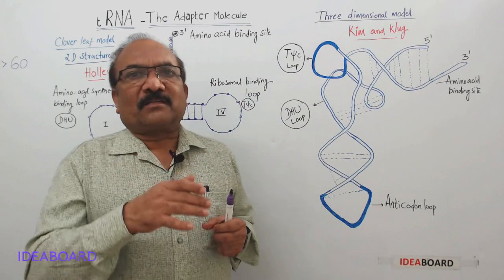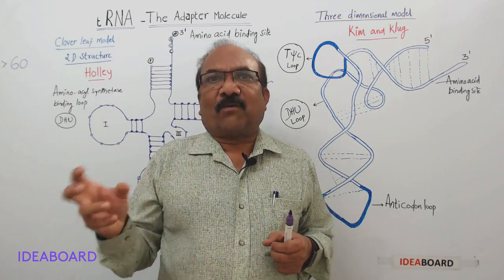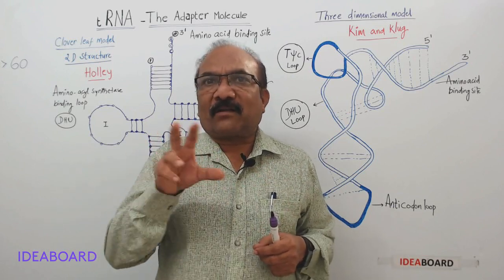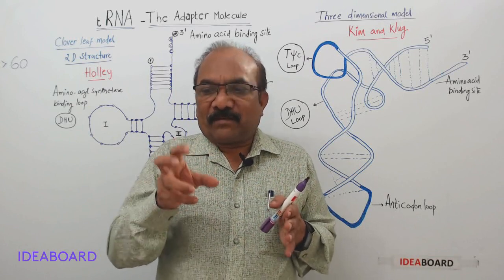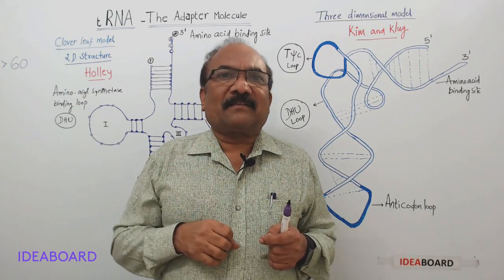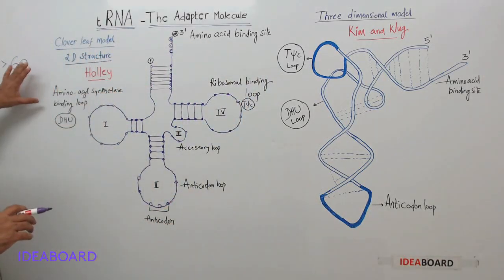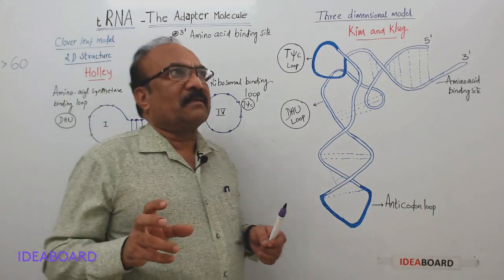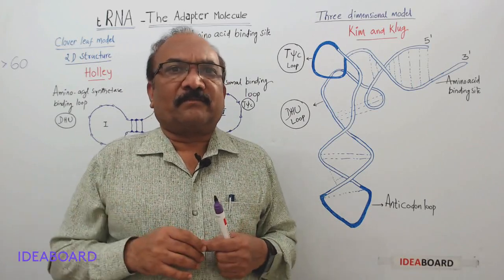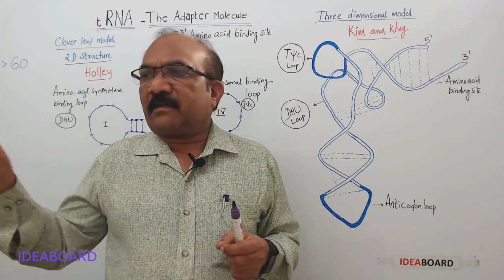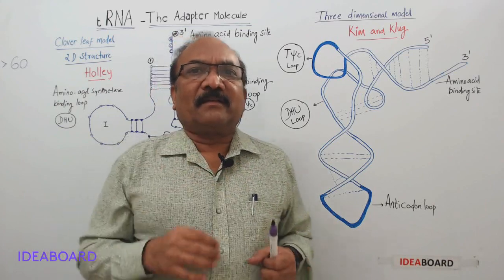Those 61 codons are distributed among only 20 amino acids. This is explained by wobble's hypothesis, which states that the first two letters of the triplet codon are very important, not the third letter. So tRNA brings the amino acid by recognizing the first two letters. Remember, tRNA is the smallest RNA among the three types: ribosomal RNA, messenger RNA, and transfer RNA. Messenger RNA is the longest, rRNA is smaller, and tRNA is the smallest.